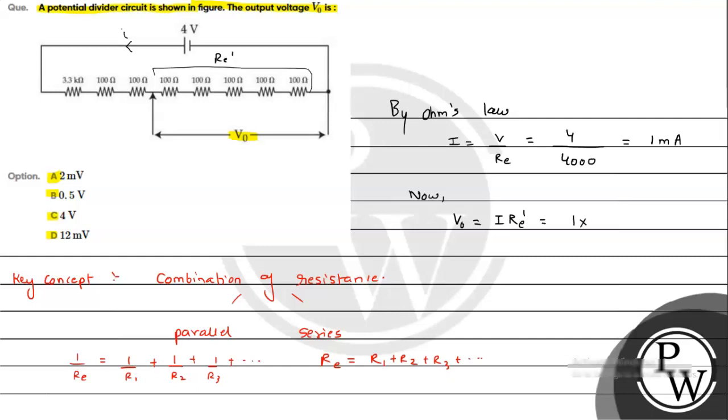If we talk about R equivalent, it will be just 500 ohms. So this will be 500 ohms into 1 milliamp, which is 1 times 10 to the minus 3 ampere.